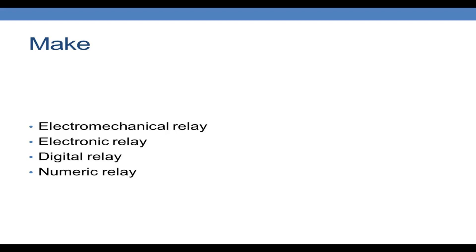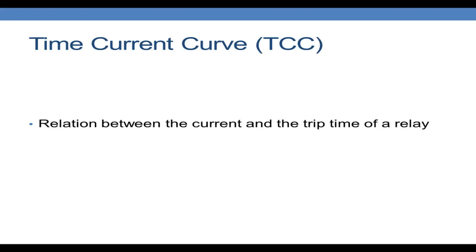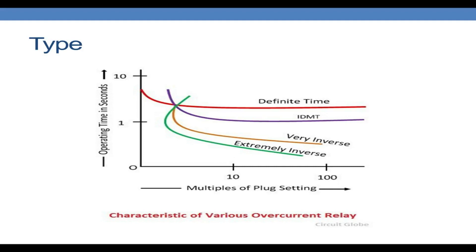The numeric relay is the most advanced relay we have now. Before going into the next classification, I will talk about TCC curves — time current curves. TCC curves give the relationship between the current and the trip time, or the plug setting multiplier of the relay and the time taken by the relay to trip. Depending upon the type we can classify relays as definite time relay and the inverse definite minimum time, or IDMT, which includes various sub-classifications such as normally inverse, extremely inverse and so on.